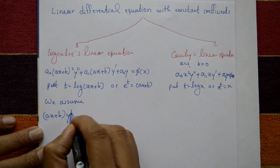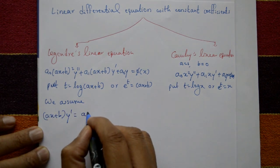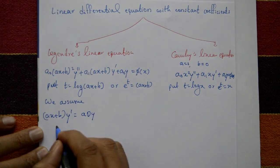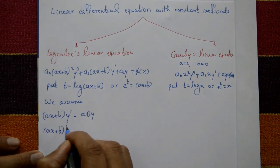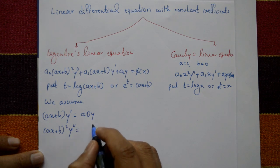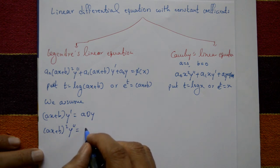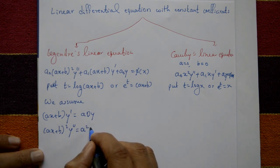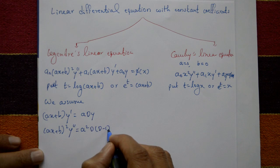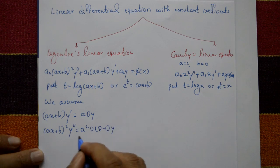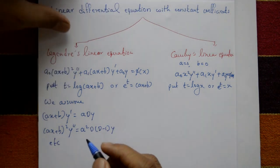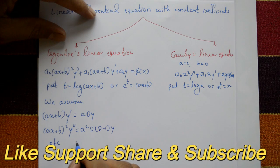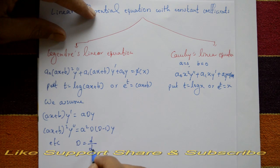For Legendre's equation, the assumed results are: (ax + b) times y-dash equals a times D times y, and (ax + b) squared times y-double-dash equals a-squared times D times (D minus 1) times y, and so on, where D stands for d by dt.